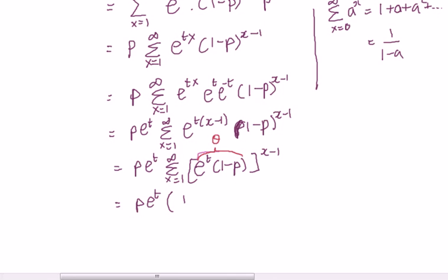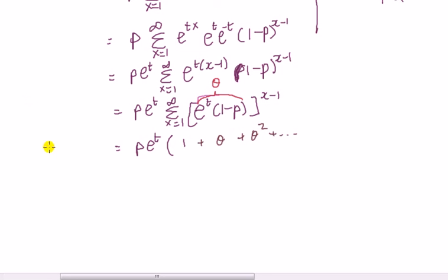So we'll have 1 and then plus theta squared, theta sorry, because when x is 2 that's going to be the power of 1, 2 minus 1 is 1 so that's going to be theta plus and then 3, 3 minus 2 is 2 and then theta squared and so on that's a geometric progression. If the absolute value of theta is less than 1, so if it is less than 1 we could say it's e to the t over 1 minus theta straight away.